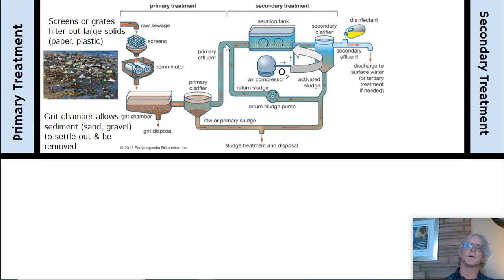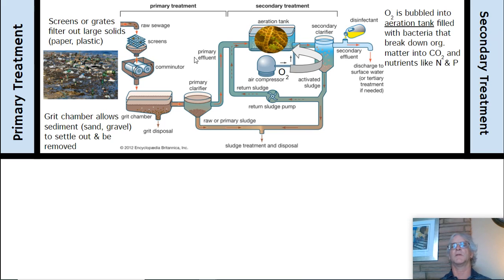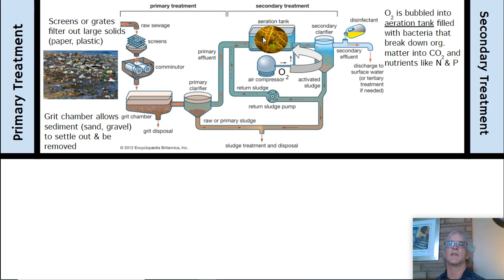The remaining liquid goes up to an aeration tank filled with bacteria, where oxygen is pumped through — because it's an aerobic process — and the bacteria break down organic material into CO2 and nutrients like nitrogen and phosphorus. At Hyperion, they use different bacteria that produce methane instead, and they send that methane directly to an electrical plant next door. Between 40% and 60% of the electricity used by Hyperion wastewater is recovered from that methane.